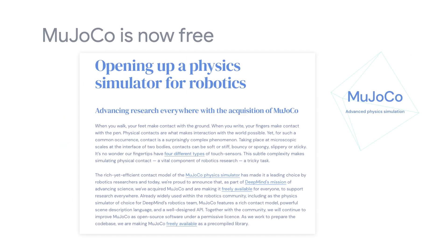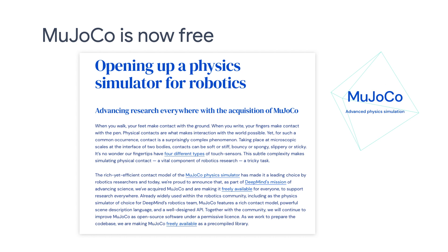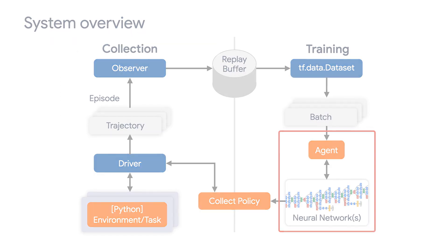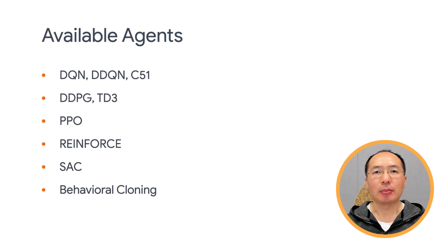TF Agents also has an interface to MuJoCo. Recently, MuJoCo was acquired by DeepMind and is now free to use. TF Agents has implemented a number of classical and state-of-the-art agents, such as DQN, Reinforce, and PPO.